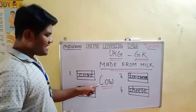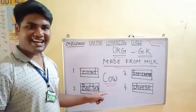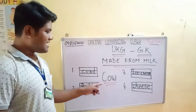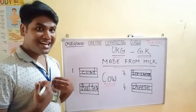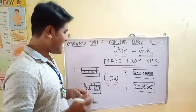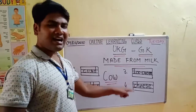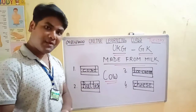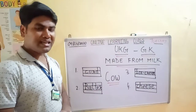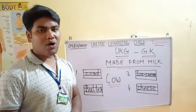C-O-W. C-O-W gives us milk. And all these four are milk products.